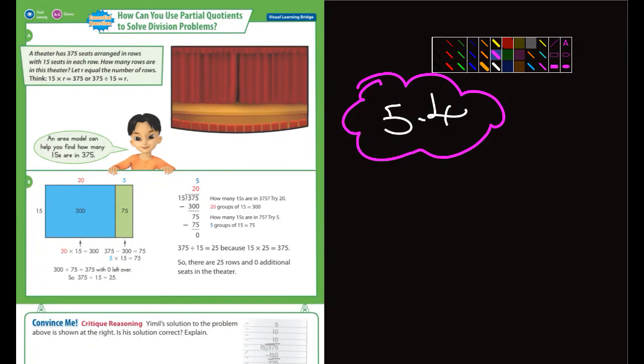Okay, fifth graders, we're starting 5-4. And 5-4 is about using partial quotients to solve division problems. They give us some examples that may or may not be helpful to you. You can look at those if you want.